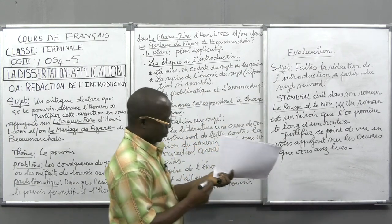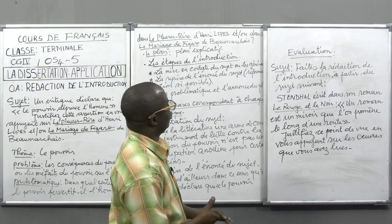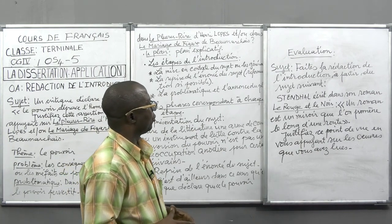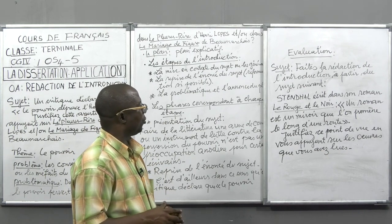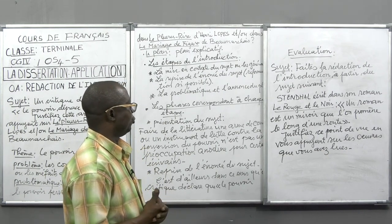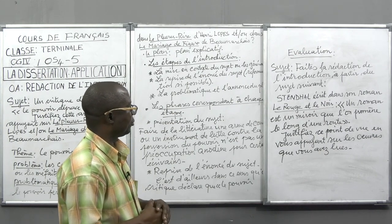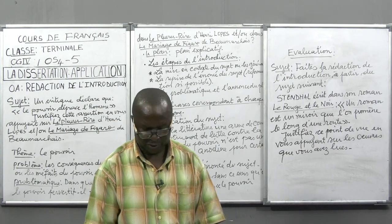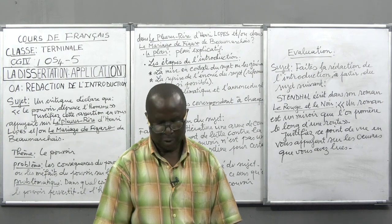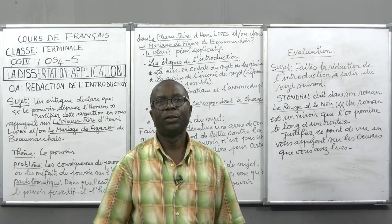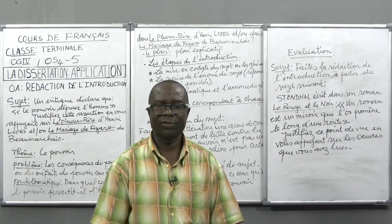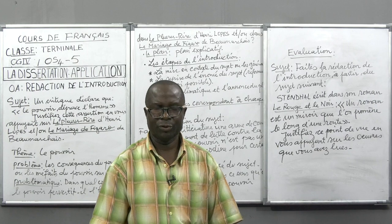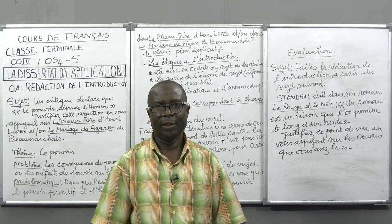Nous relisons le travail à faire à la maison. Sujet : faites la rédaction de l'introduction à partir du sujet suivant — Stendhal écrit dans son roman Le Rouge et le Noir : « Un roman est un miroir que l'on promène le long d'une route. » Justifiez ce point de vue en vous appuyant sur les œuvres que vous avez lues. Vous pouvez vous appuyer évidemment sur Le Pleurer-Rire d'Henri Lopez. Voilà, chers élèves, ce que je tenais à partager avec vous ce matin pour vous aider à renforcer vos compétences depuis vos maisons. Suivez le modèle que nous avons initié au tableau ce matin pour rédiger vos introductions, et nous allons à très bientôt nous revoir. Je vous dis merci.